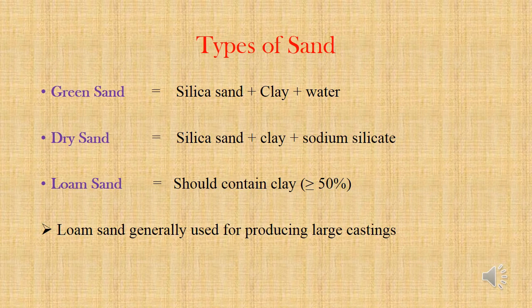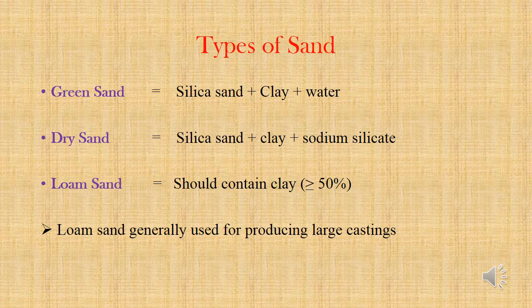Now we are seeing the basic types of sand. Green sand is a mixture of silica sand, clay and water. And dry sand is a mixture of silica sand, clay and sodium silicate. The simple difference between these two sands is that green sand has moisture content and dry sand does not have moisture.